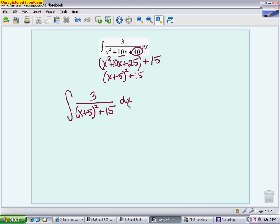Now it looks a lot more like an inverse tangent integral. U is x plus 5. du is just 1 or dx. 15 is not a perfect square, so I'm just going to write a as the square root of 15. That does not simplify. If it does, you can, but you do not have to to get full credit.